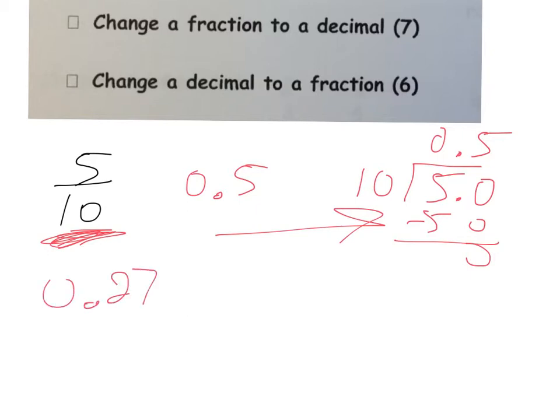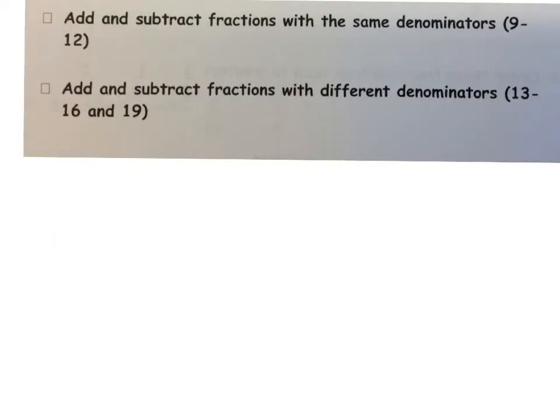You can either use your place value knowledge, or you can use your division knowledge. Either way, you're going to get there. The next one here we'll talk will be, let's do 0.27. I know that my 7 is in the hundredths place. So, if I want to write that as a fraction, that would be 27 hundredths, because the 27 hundredths is my place value. Pretty simple with those. Sometimes you can simplify that. In this case, you can't simplify 27 hundredths. So, it is what it is.